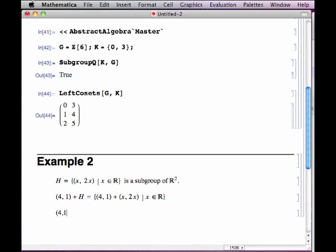If we look closely at the elements, without using set notation for every one of the lines, we have (4, 1) plus the pair (x, 2x), and that's, if we add those, the pair (x+4, 2x+1).